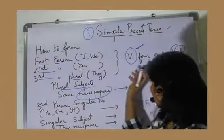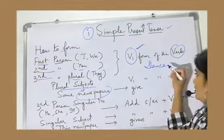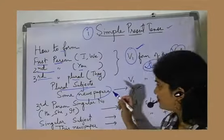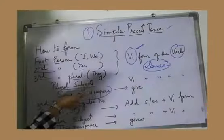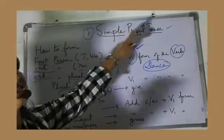Example: I dance, we dance, you dance, they dance. So this is the root form of the verb. With plural subjects as well, we use the V1 form of the verb in simple present tense.